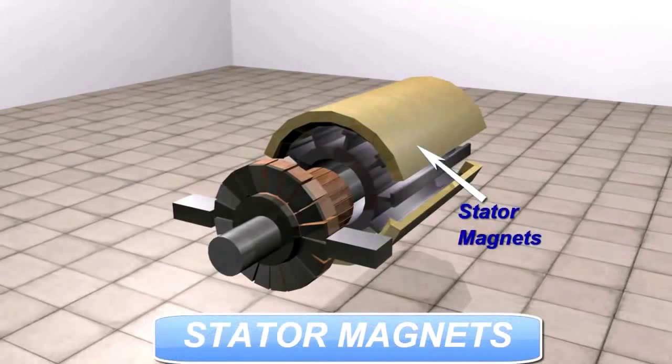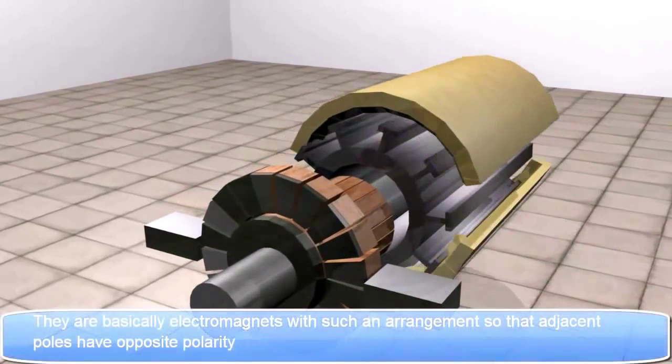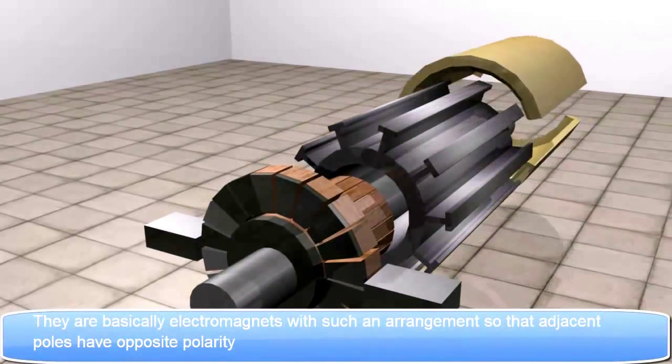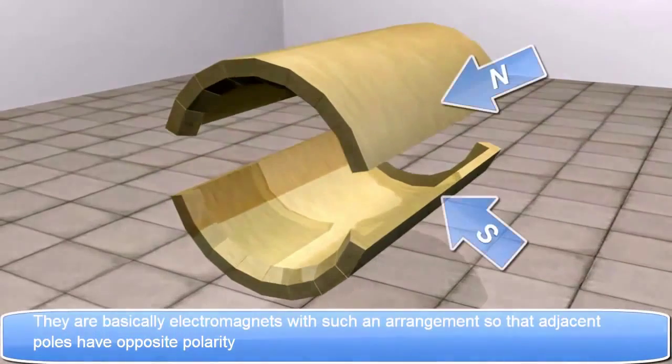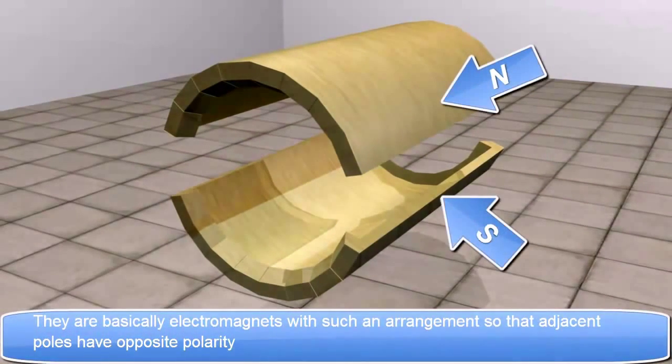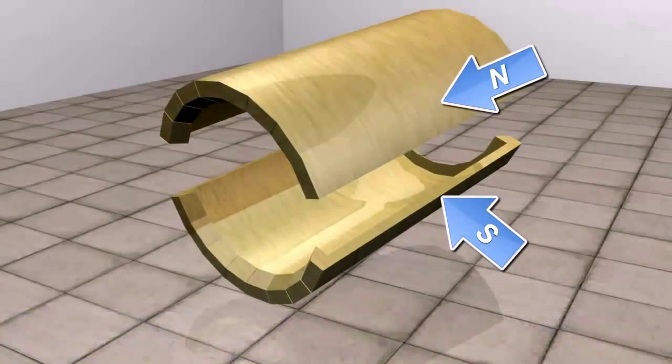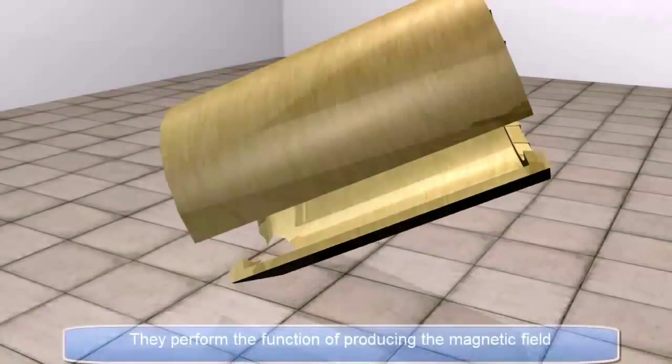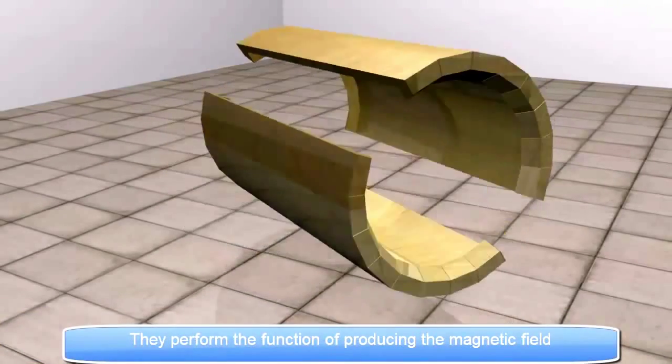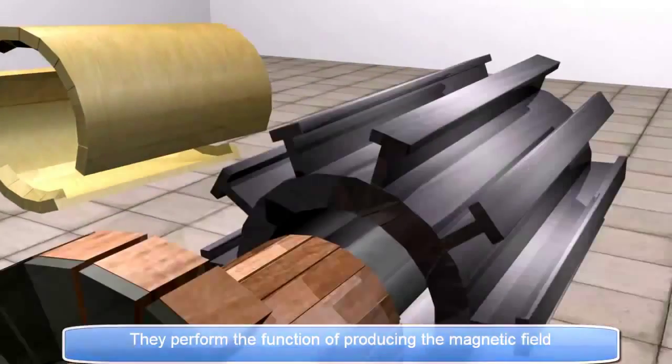Stator Magnets. They are basically electromagnets with such an arrangement so that adjacent poles have opposite polarity. They perform the function of producing the magnetic field.